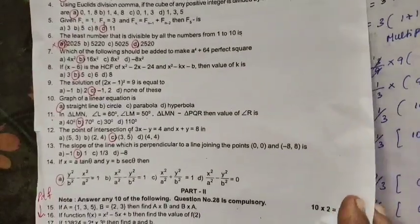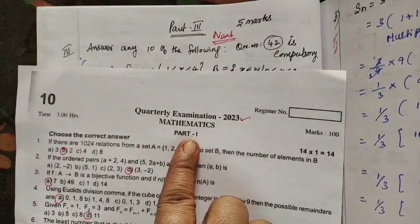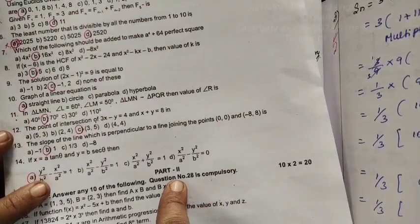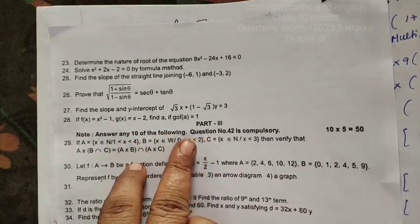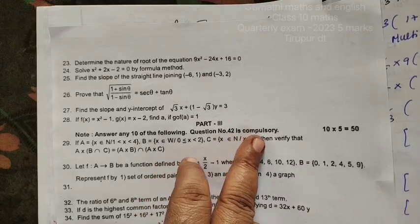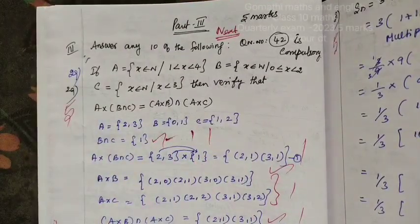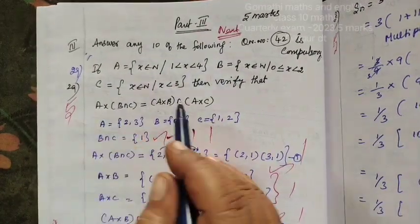Hello everyone. In this video, we are seeing the Quarterly Examination 2023 — this is the Thirupoor Question, Part 1 and Part 2. Now we are seeing Part 3, which has 5 more questions. Answer any 10; Question No. 42 is compulsory. So this is a revision. As I told earlier, we are doing all the workouts just to go through.